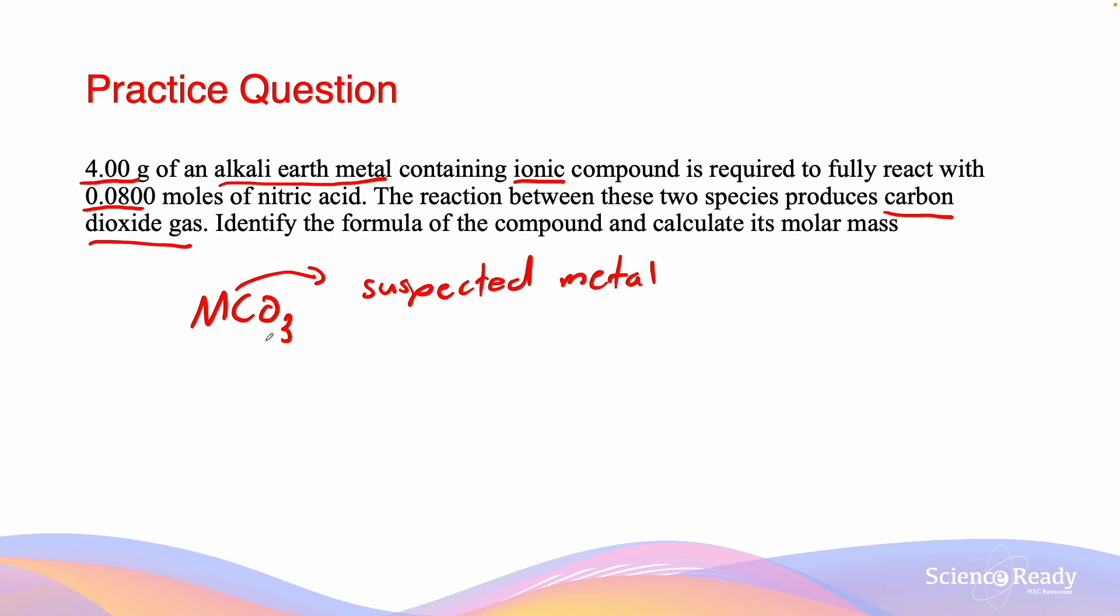Writing an equation between the ionic compound and nitric acid, we get MCO3 solid plus HNO3 aqueous produces MNO32 plus H2O water plus CO2 gas. To balance this equation, we simply need to add a 2 in front of the HNO3.